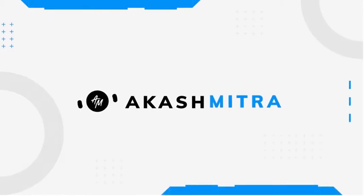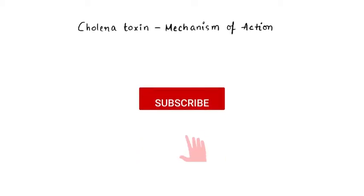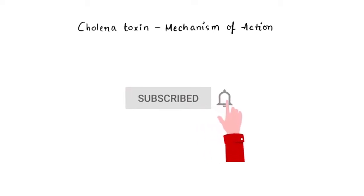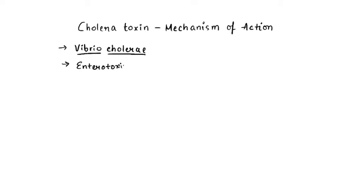Hello everyone and welcome back to another video. In this one we are going to talk about the cholera toxin, which is a bacterial toxin produced by the bacteria Vibrio cholerae. This cholera toxin is a type of toxin also called the enterotoxin, and this affects the intestine.